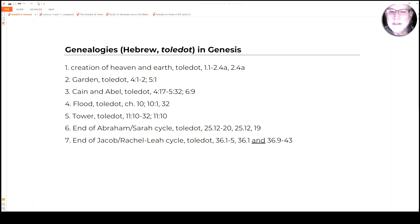And following Michael Fishbane's use of the first five of these, showing that each of the Toledotes comes after a major episode. And I want to suggest as well that that's true all the way through. I added six and seven of that. So at the end of the Abraham and Sarah cycle, and then the Jacob, Recha, and Leah cycle, we have another genealogy.